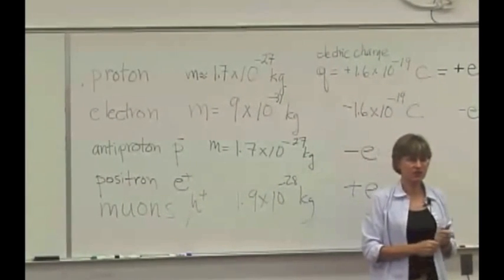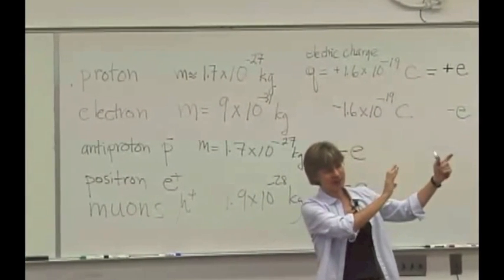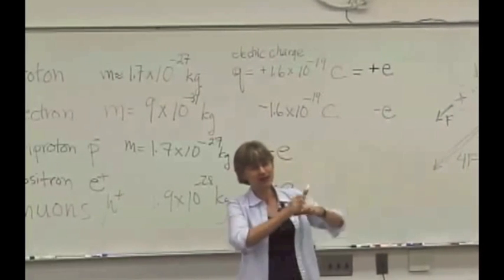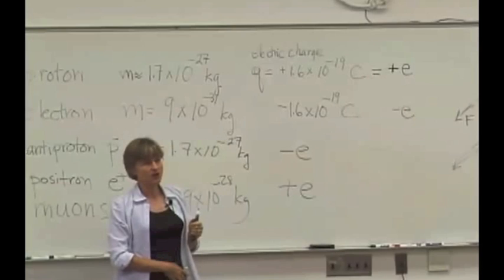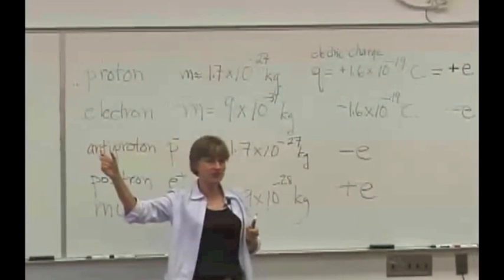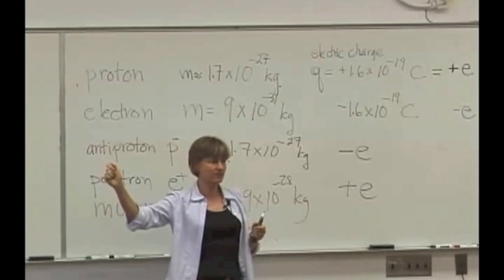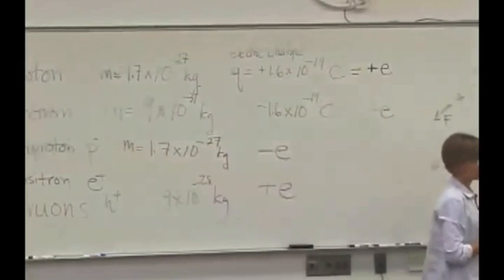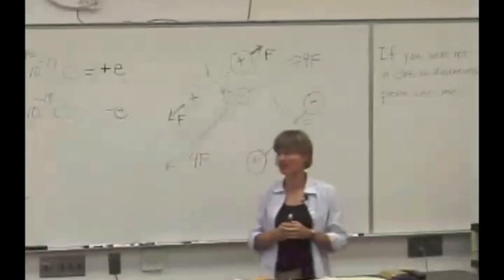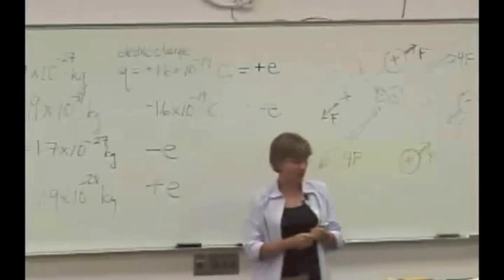It's the same thing with gravitation. The sun, a big massive object, is making everywhere in space a large gravitational field waiting for some other massive object to come along and be affected by it. For example, the Earth, which orbits the sun because of the gravitational interaction between them.